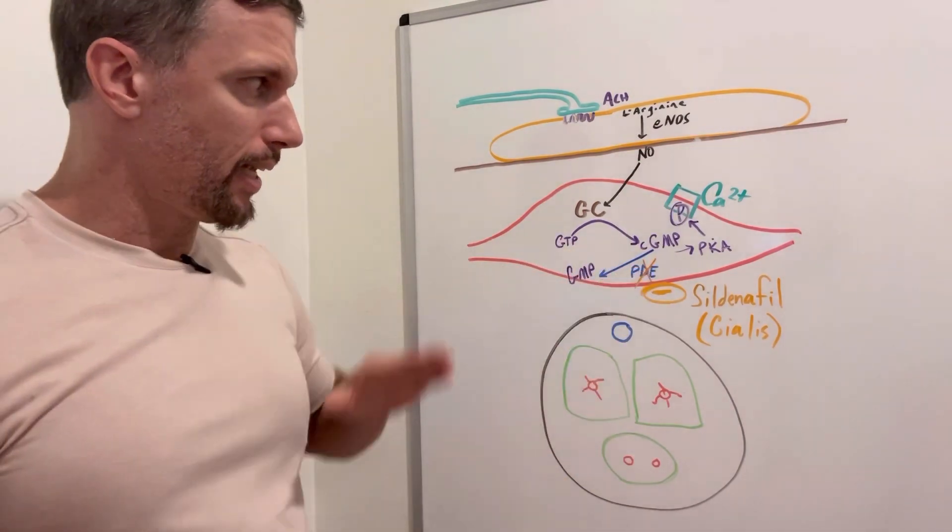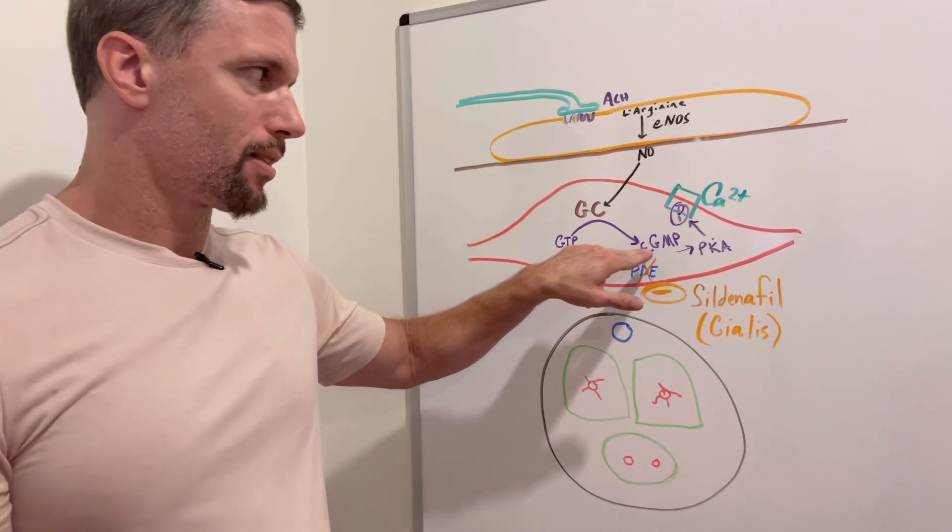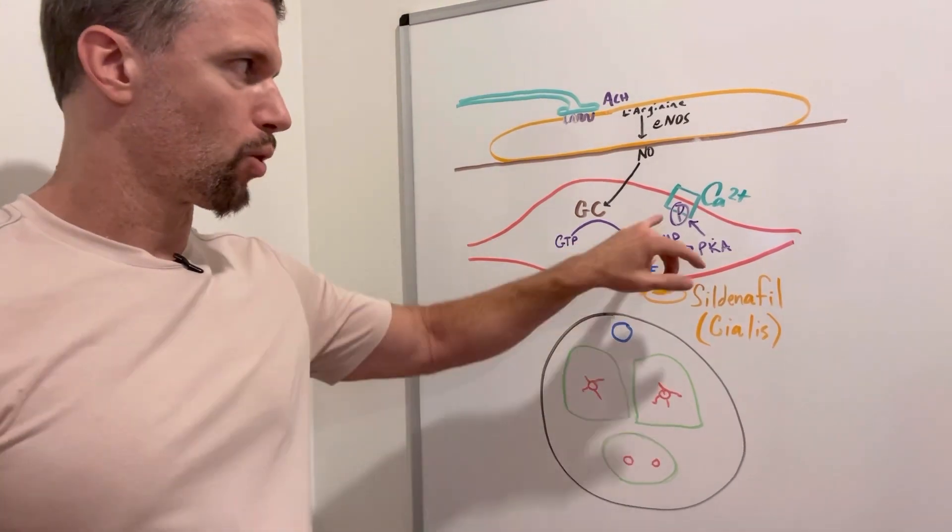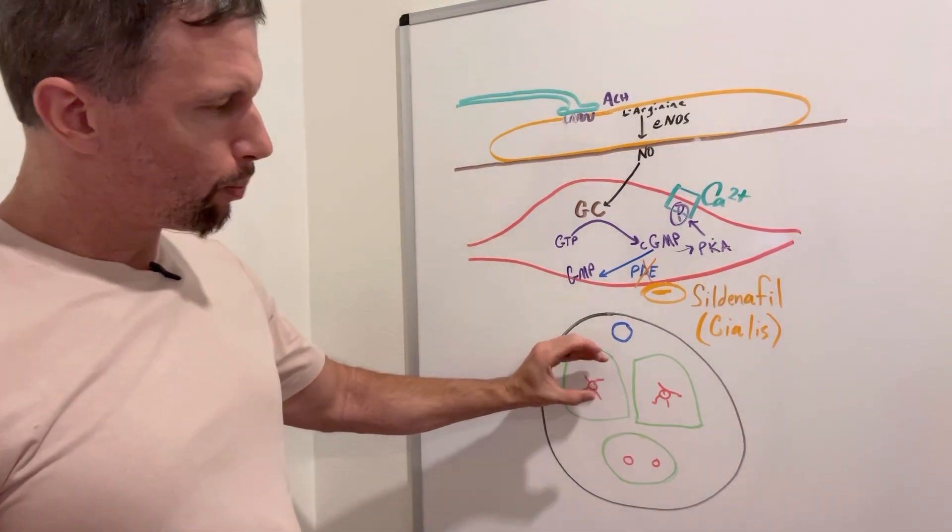So if you're blocking that phosphodiesterase, that keeps this cyclic GMP functioning, and it continues to phosphorylate and continues to keep these arteries open.